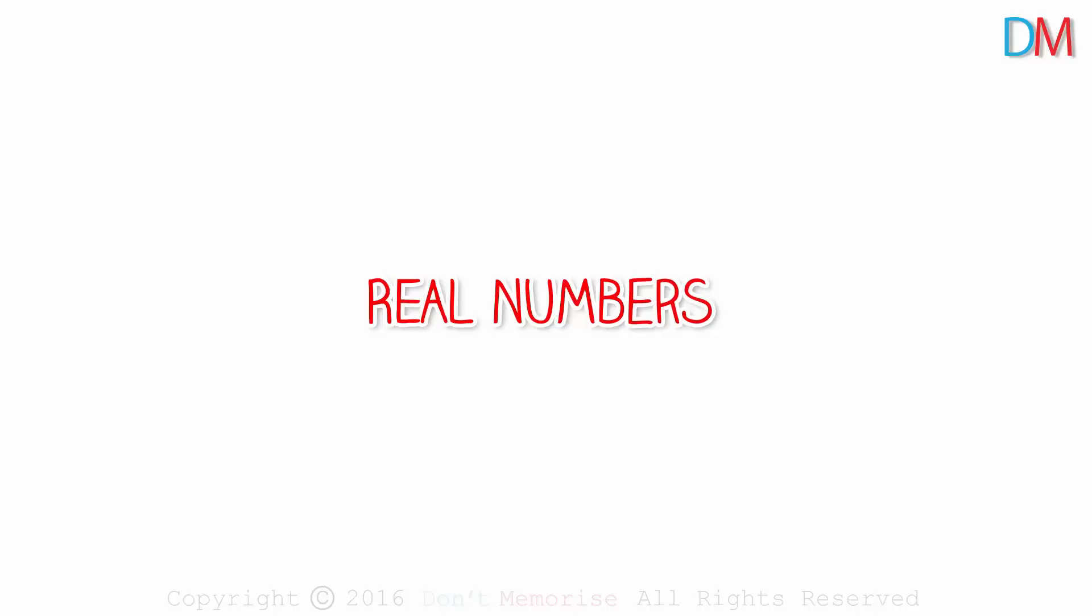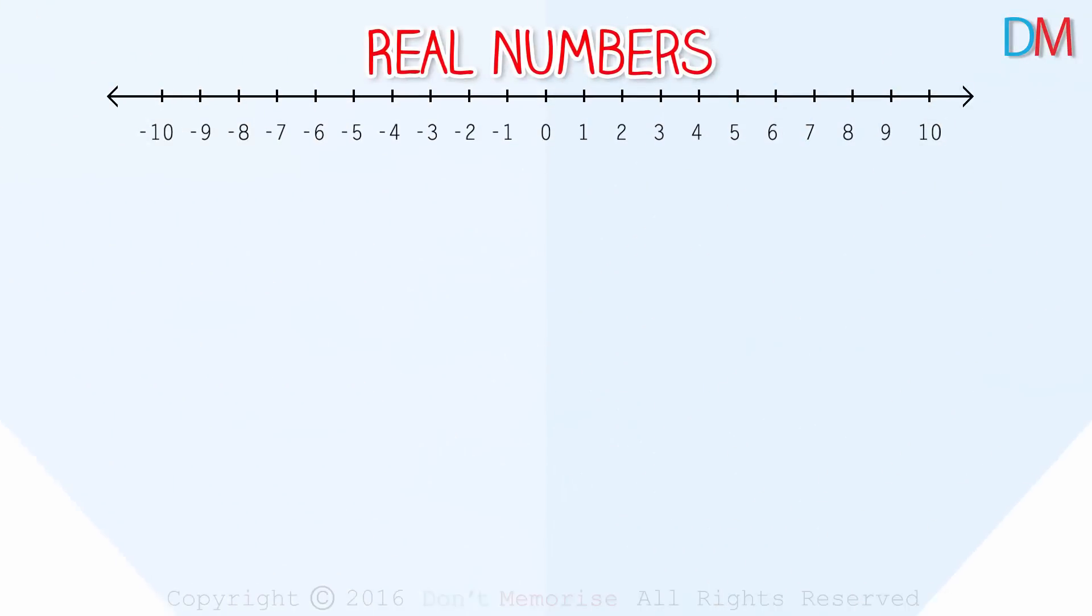We already know what real numbers are. These are the numbers that can be represented on the number line. We also know that real numbers can be broadly classified as rational and irrational numbers.